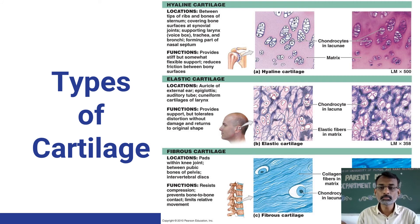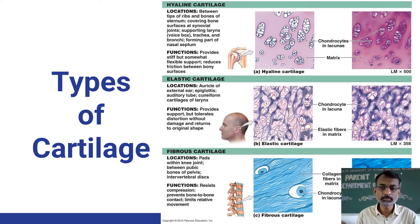In the histological diagram, you can see chondrocytes present in the lacunae. This is the actual structure. There are so many chondrocytes present inside with the matrix. The function of hyaline cartilage is that it provides stiff but somewhat flexible support.